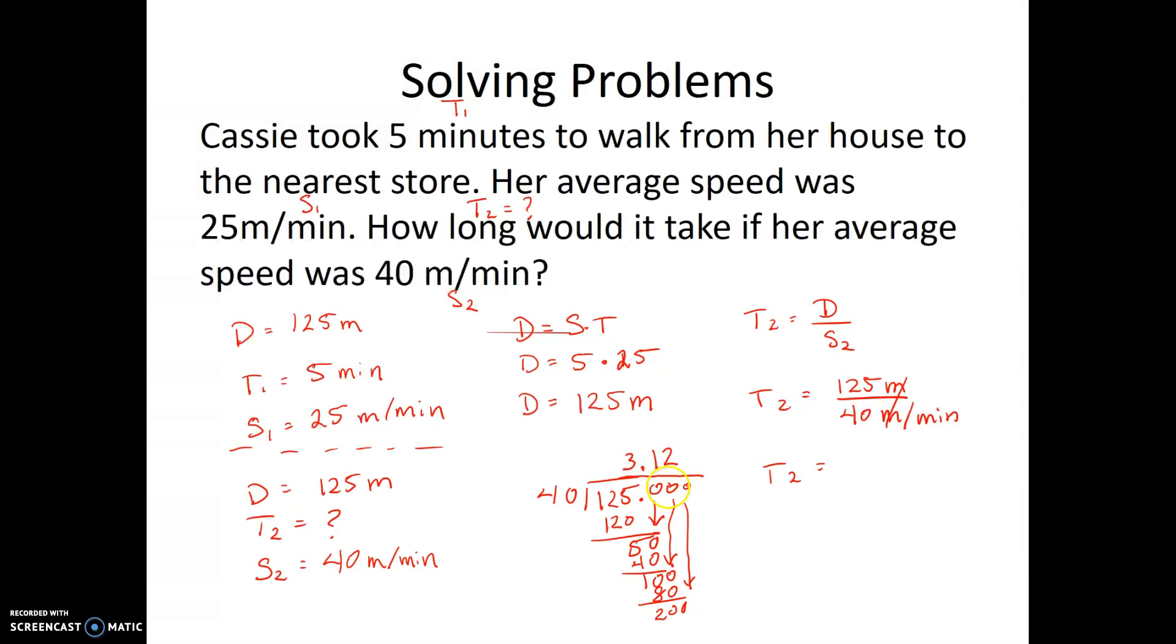Bring down that third 0, and 200 divided by 40 is 5. So my answer is 3.125 minutes, and that's how long it would take if she walks 40 meters per minute.